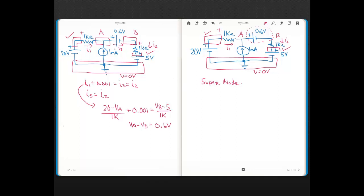And when you have a supernode, for the purposes of writing a KCL equation, you can treat that node as a single node. See, over here, we treated nodes A and B as two separate nodes when we wrote the KCL. Here, we're going to treat the supernode when we write the KCL equation as just a single node.